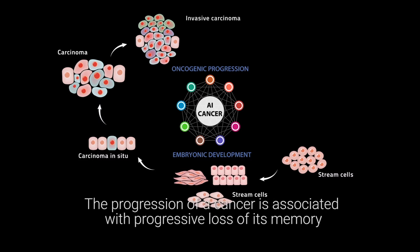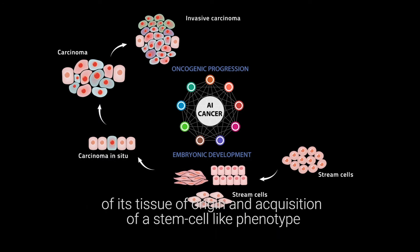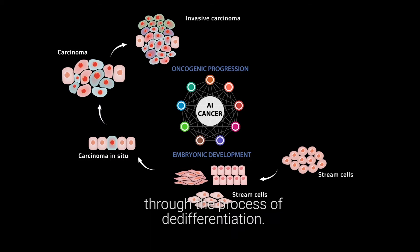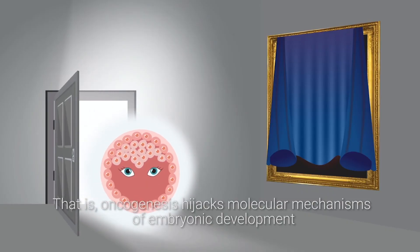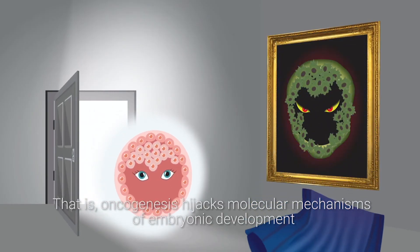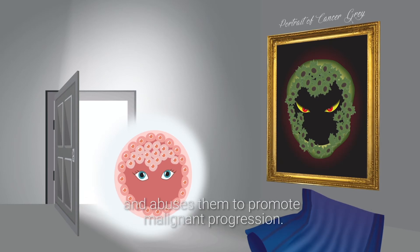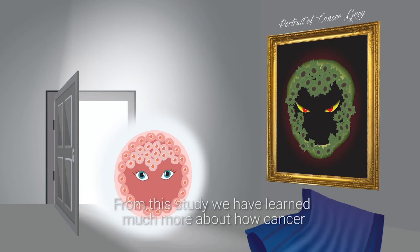The progression of a cancer is associated with a progressive loss of its memory of its tissue of origin and acquisition of a stem cell-like phenotype through the process of de-differentiation. That is, oncogenesis hijacks molecular mechanisms of embryonic development and abuses them to promote malignant progression.